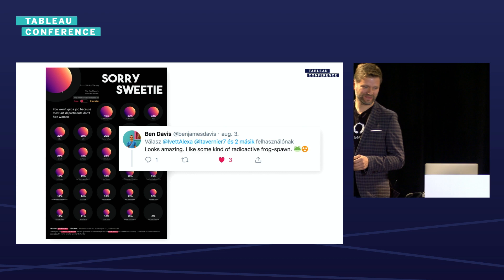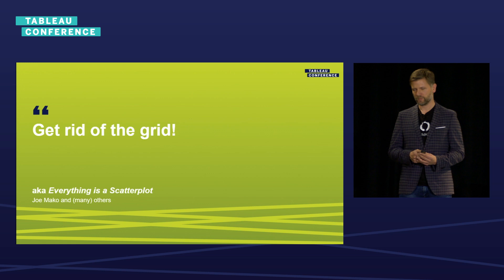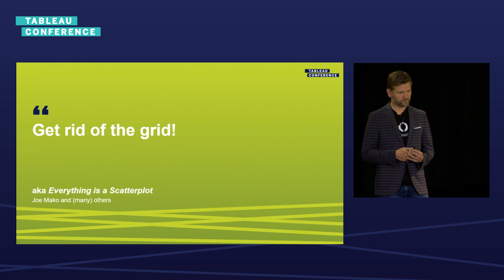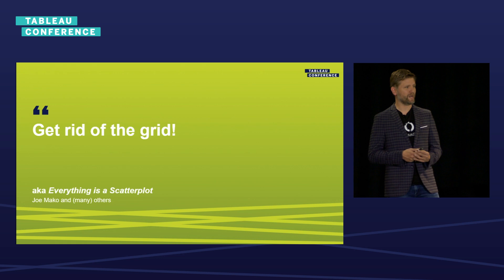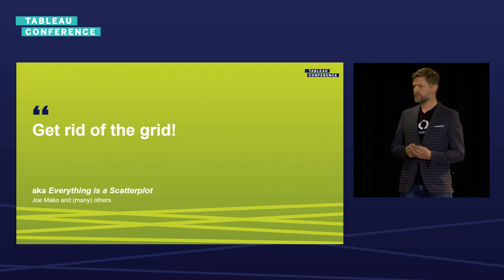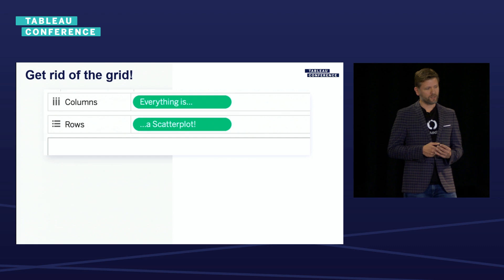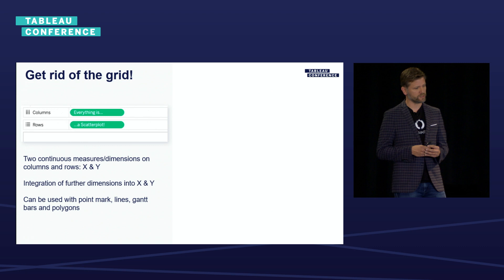A very important technique when it comes to custom visualizations is the 'everything is a scatterplot' technique, variously attributed to many people from the Tableau community — I'm mentioning Joe Mako, for example. You all probably know a scatterplot: having two continuous fields on rows and columns. So why is this a big thing? The main idea is to bring in discrete dimensions without dividing the viz into different sections — or to get rid of the grid.